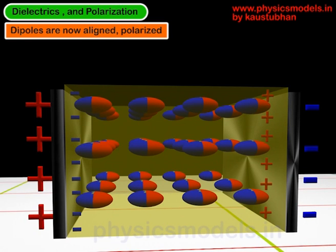After they are fully aligned, we say they are polarized and they look like this. Now inside that yellow box dielectric, you can see some plus charges on the right hand side and minus charges on the left hand side.